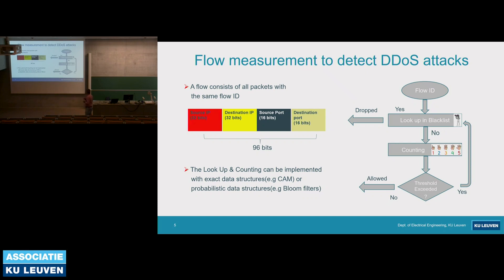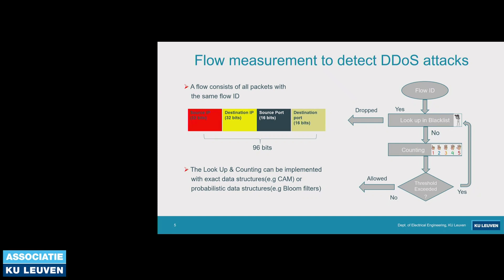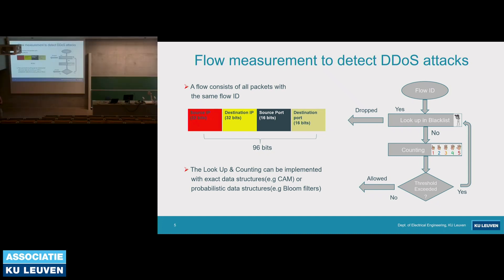When a network packet comes in, its flow ID is extracted, and then it is looked up in a blacklist. If it is there, it is dropped. Otherwise, its count is incremented, and this count is again checked against a threshold. If it exceeds the threshold, it is put back in the blacklist; otherwise it's allowed. Both the lookup and counting parts can be implemented with exact data structures, such as CAMs or arrays, or with probabilistic data structures such as bloom filters or sketches.